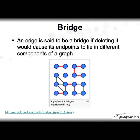A bridge is another network measure. An edge is said to be a bridge if deleting it would cause its endpoints to lie in different components of the graph. Here highlighted in red are six bridge links — if I remove these six red links, those graphs would be disconnected.